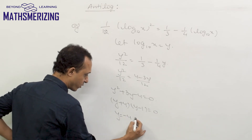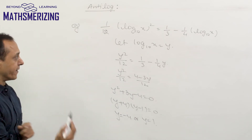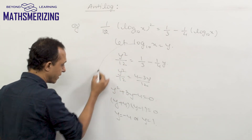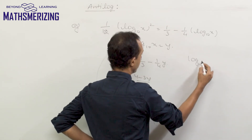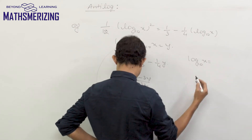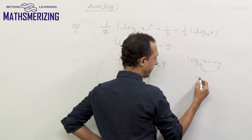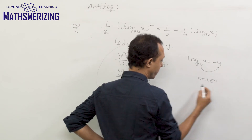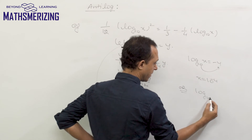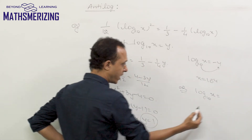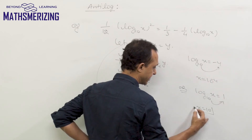So y = −4 or y = 1. Substituting back: if log x base 10 = −4, then x = 10^(−4); if log x base 10 = 1, then taking antilog gives x = 10. Therefore x = 10^(−4) or x = 10.